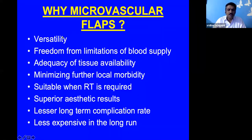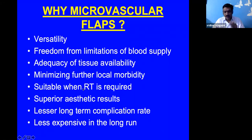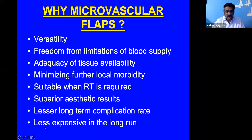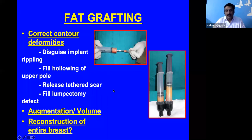Why microvascular flaps? They are versatile — tissue can be harvested from many sites. When radiotherapy has been given and vessels are available for anastomosis, this is ideally suitable as it brings healthy blood supply, improves contour and shape, and gives superior aesthetic results. In the long run, it is also less expensive as it is a single procedure.